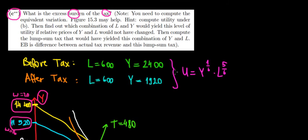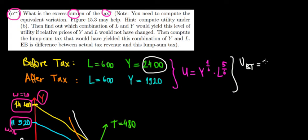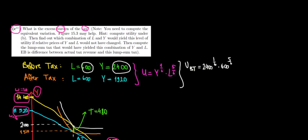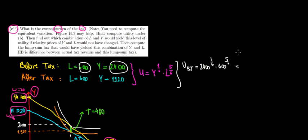First, we want to know what amount of money we are willing to pay so that we have the same utility as when charged a proportional tax — in other words, the equivalent lump sum tax. A wise step is to find the utility before tax and after tax using the utility function. Utility before tax: substituting 2,400 euros to the power of 1/6 times 600 hours to the power of 5/6 gives approximately 755.95 units of utility.